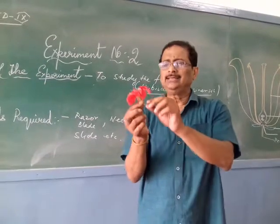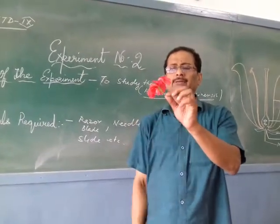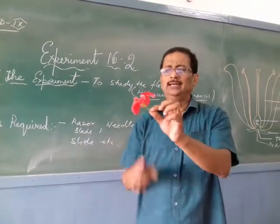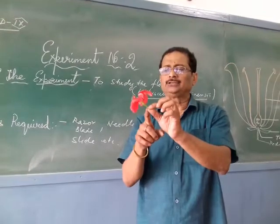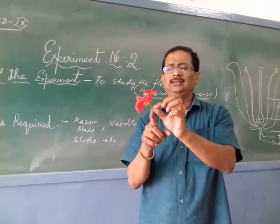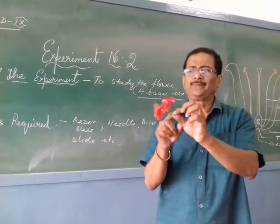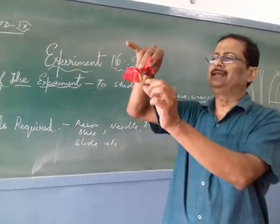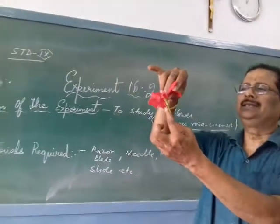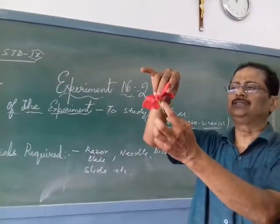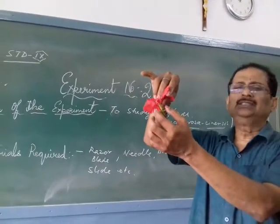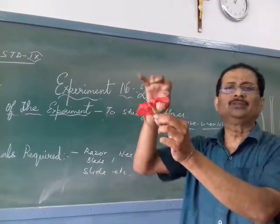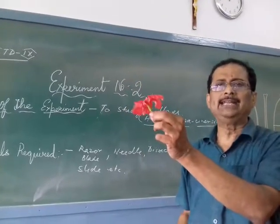This flower is a solitary flower because it remains alone, and it has a short stalk called the peduncle. Below it you can find small green color structures called the bracts. Since a bract is present, we call this flower bracteate.